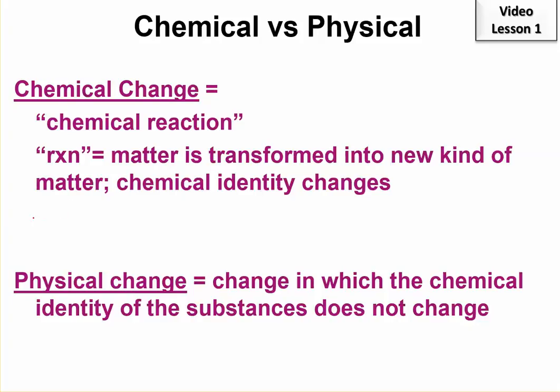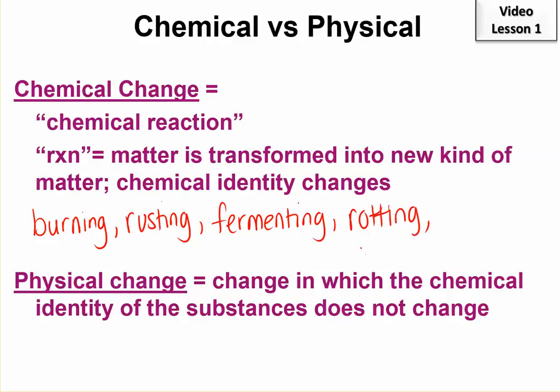For example, chemical changes would be burning, that's combining with oxygen, rusting, fermenting, rotting, and digesting. Those are just a few examples, but you need to know these five. Make sure you know these.